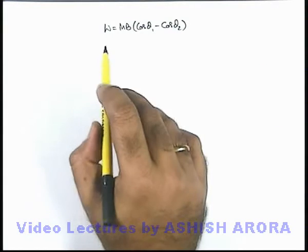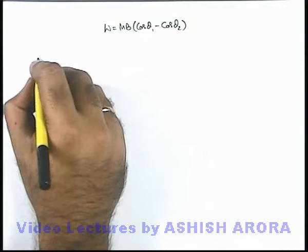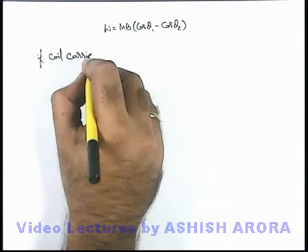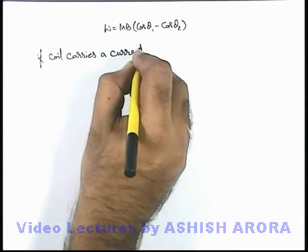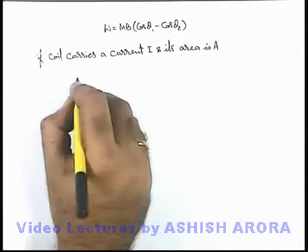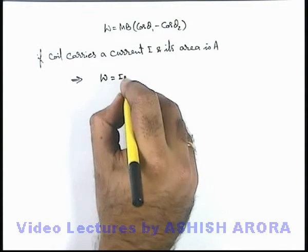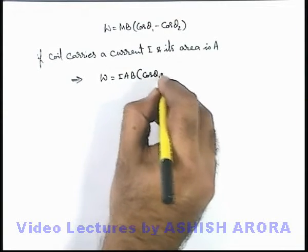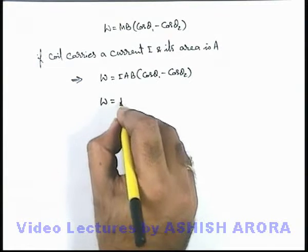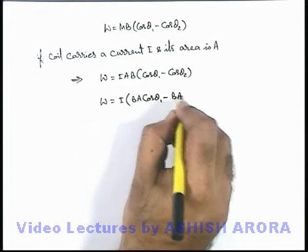As we have just seen, the work done in changing the orientation of the loop or coil is m B cos theta 1 minus cos theta 2. If the coil carries a current i and its area is A, this implies the work done can be written as — since m equals i A — it becomes i A B multiplied by cos theta 1 minus cos theta 2, which equals current multiplied by B A cos theta 1 minus B A cos theta 2.